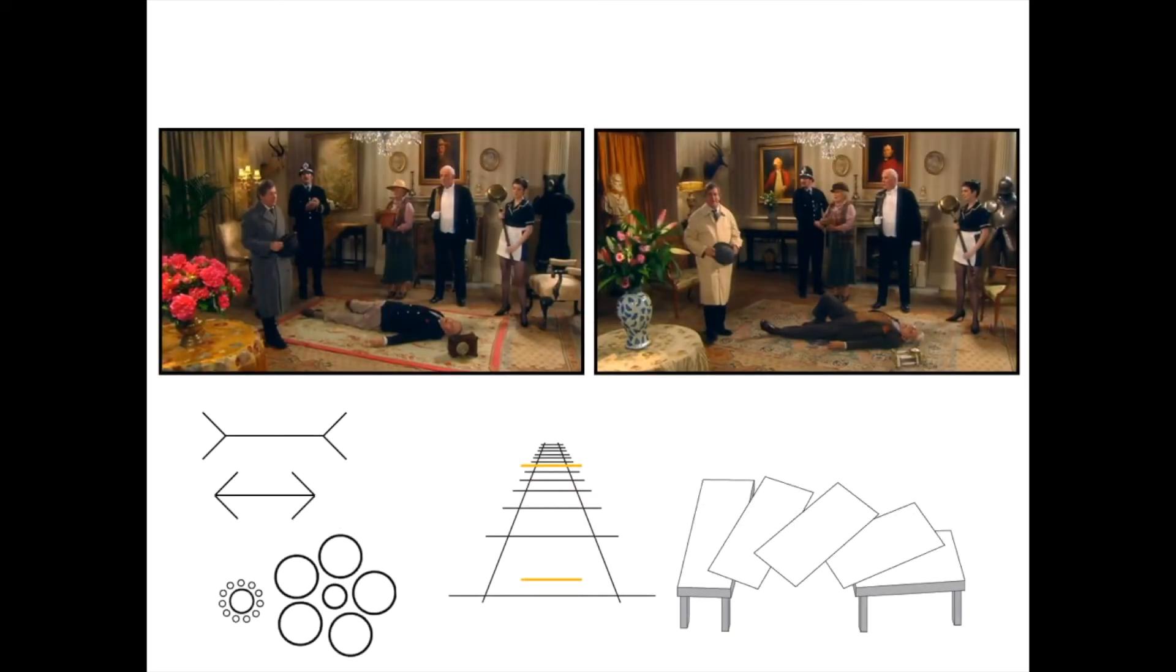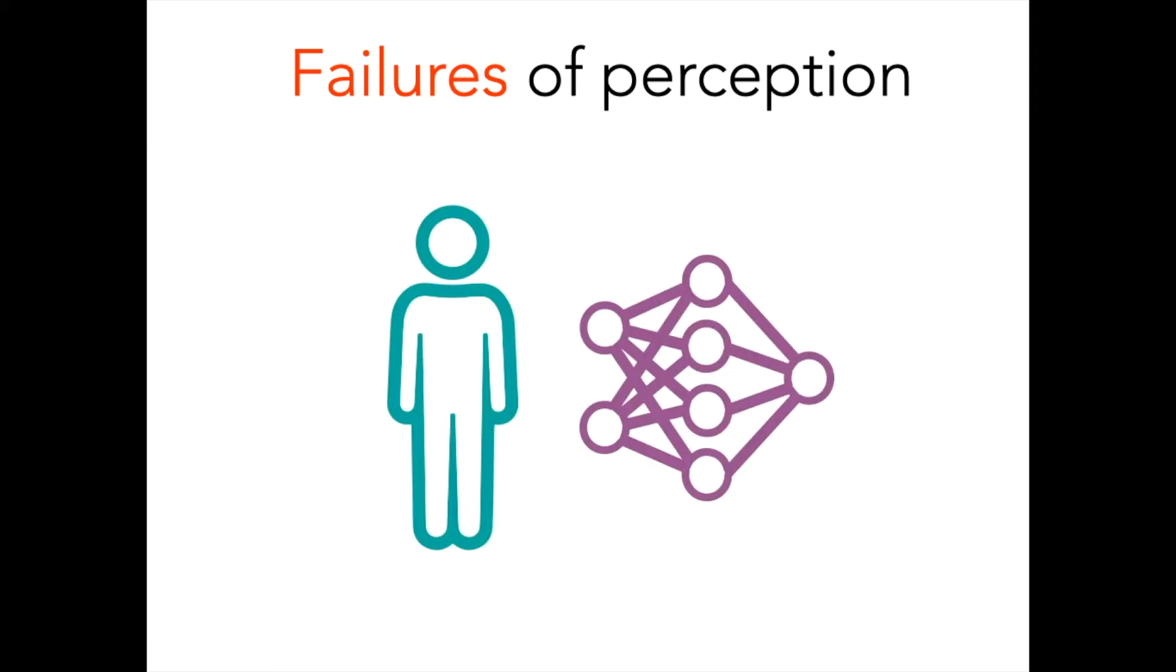These examples of change blindness and visual illusion are both cases of failures of perception. My lab has been using a new approach to try and understand the nature of these types of failures. We've been using behavior of humans and behavior of computer vision models to see what both of these can tell us about the nature of failures of perception. In particular, what type of human behavior is and is not displayed by deep learning models? And what about deep learning models can tell us about why humans experience certain types of failures of perception?